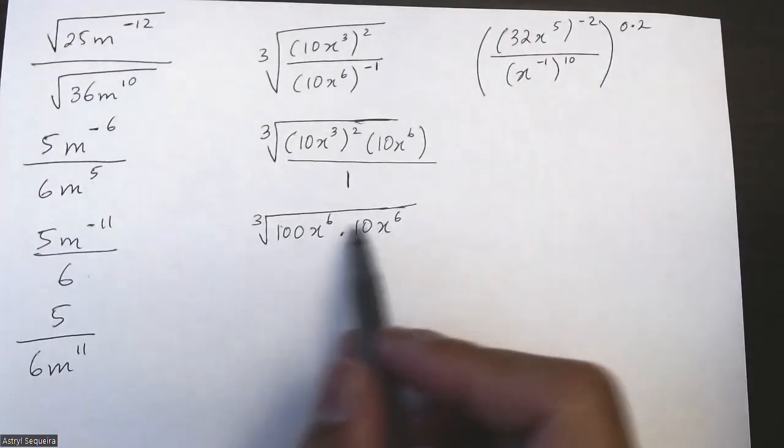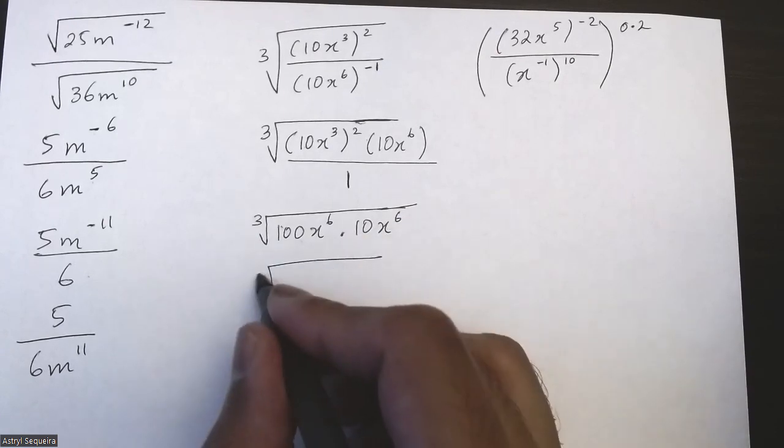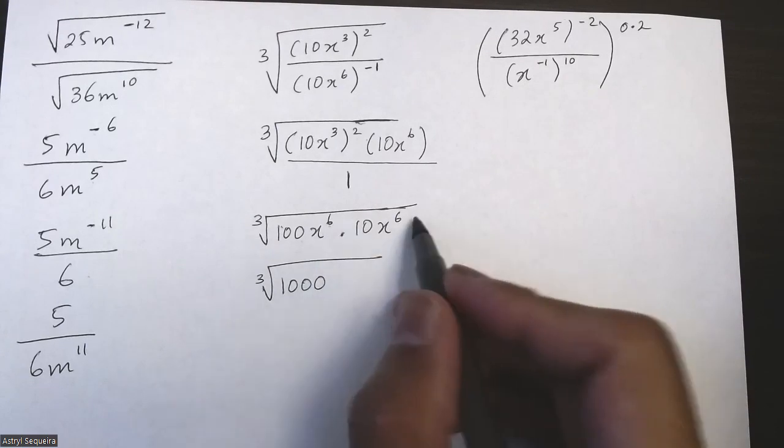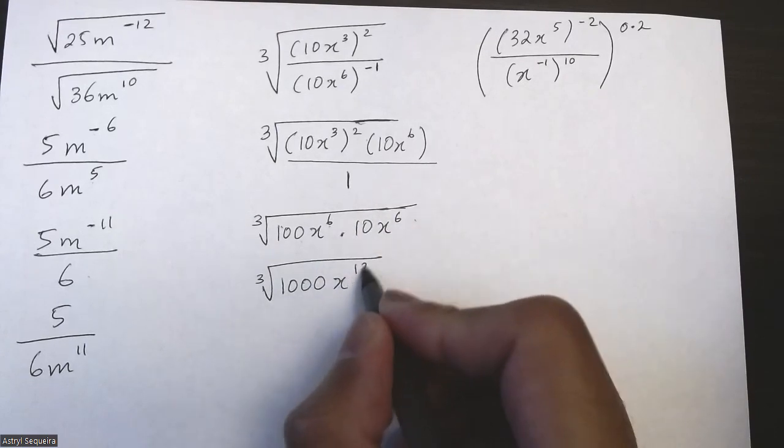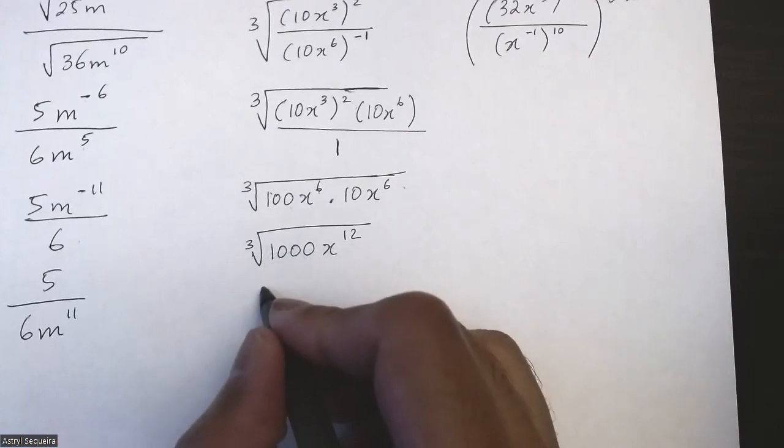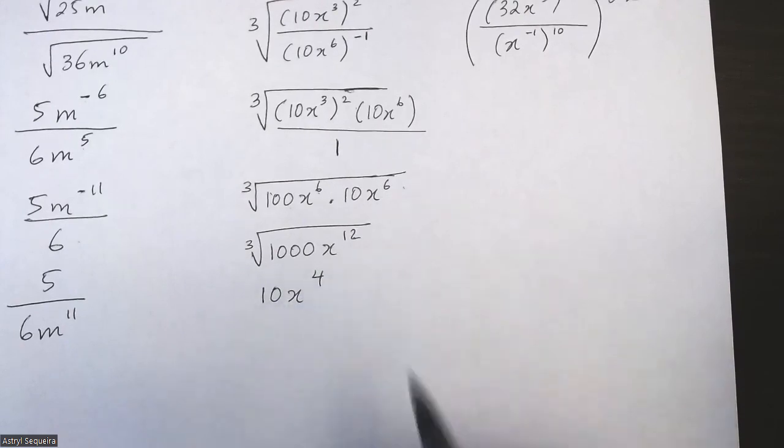Now combine these terms. So 10 times 100 times 10 is 1000, and 6 plus 6 is just 12. Now I can cube root this, so cube root of 1000 is just 10, and 12 divided by 3 is just 4.